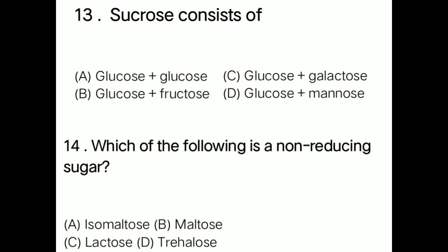Question: Sucrose consists of option A glucose plus glucose, option B glucose plus fructose, option C glucose plus galactose, option D glucose plus mannose. Correct answer is option B: glucose plus fructose.